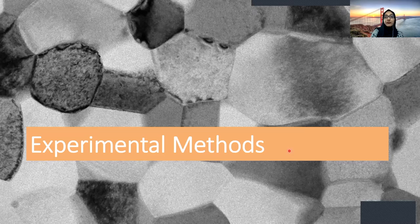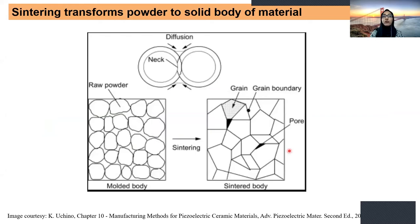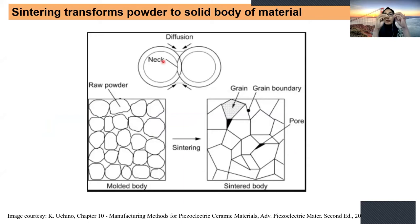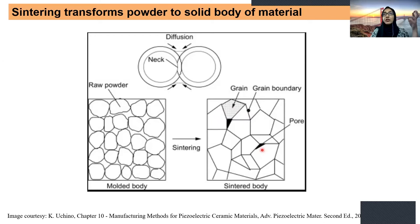I'll go over the experimental techniques we used, but first I want to give a brief overview of what sintering is for those who may not be very familiar. Sintering is simply the densification of powder into a solid mass of material. You start with a loose powder, which you press into a compact. This compact or pellet is then fired at very high temperatures for long periods of time. Because of diffusion, these powders join together — that's where grain boundaries form. The final sintered body has grains, grain boundaries, and because it's not typical to get 100% dense ceramic, you will also get some pores.